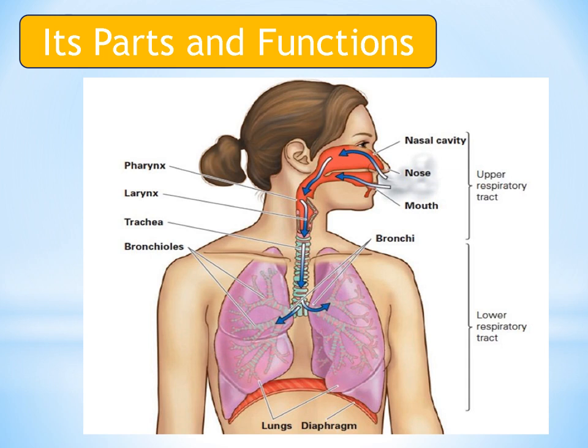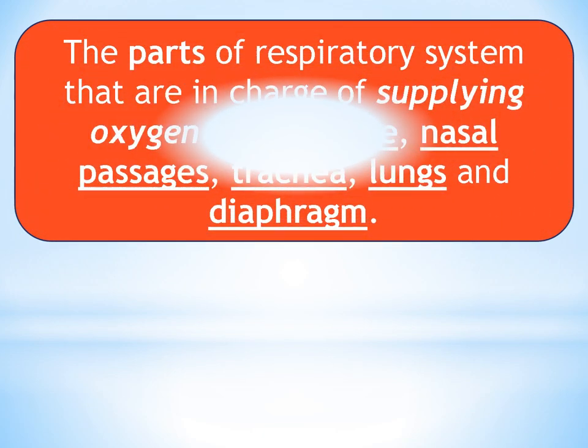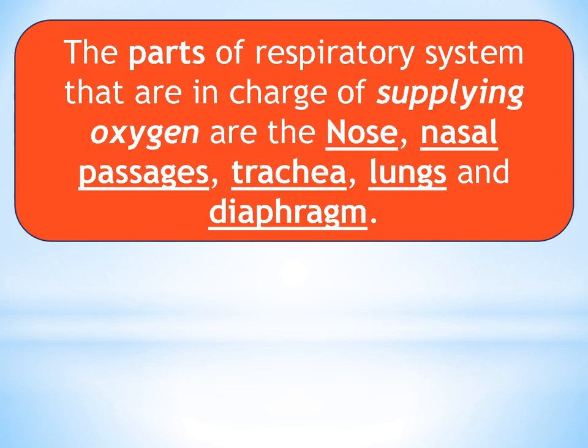Since there are different organs associated with breathing, there are different parts of the respiratory system. The upper respiratory tract is composed of the nose, mouth, nasal cavity, pharynx, and larynx, while the lower respiratory tract consists of the trachea, bronchi, bronchioles, lungs, and diaphragm. The parts in charge of supplying oxygen are the nose, nasal passages, trachea, lungs, and diaphragm.